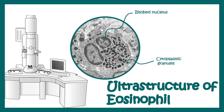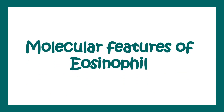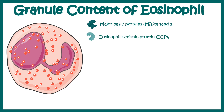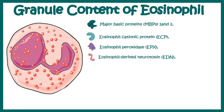The question is: what is inside these cytoplasmic granules? Granules constitute a majority of the cytoplasmic content in Eosinophil. There are many proteins such as Major Basic Protein MBP1 and MBP2, Eosinophil Cationic Protein ECP, Eosinophil Peroxidase EPX, and Eosinophil Derived Neurotoxin EDN. These are the four major components of the cytoplasmic granules.